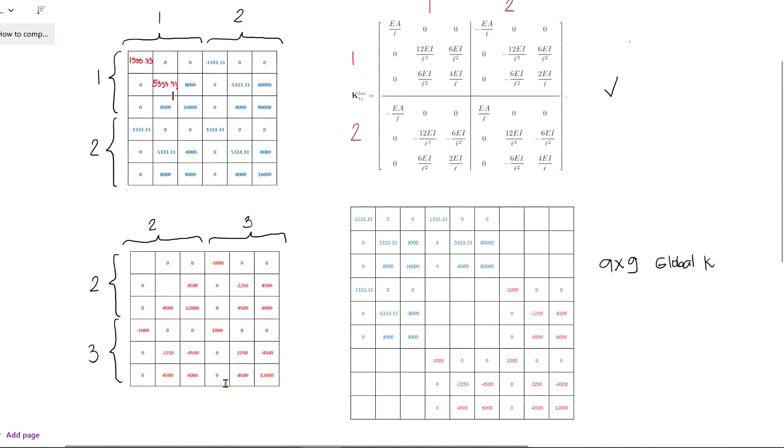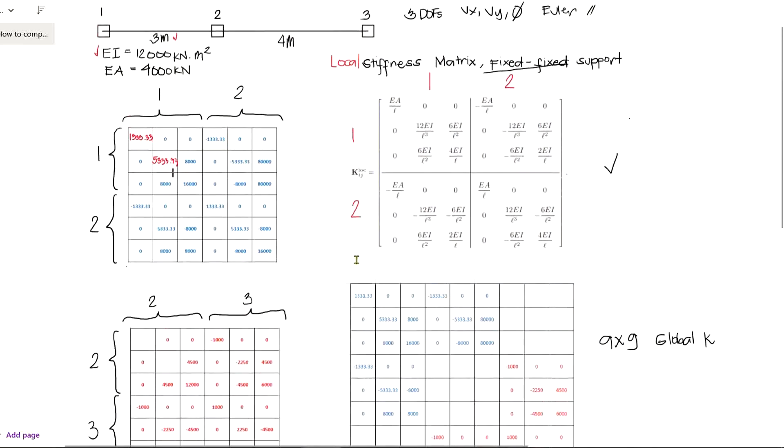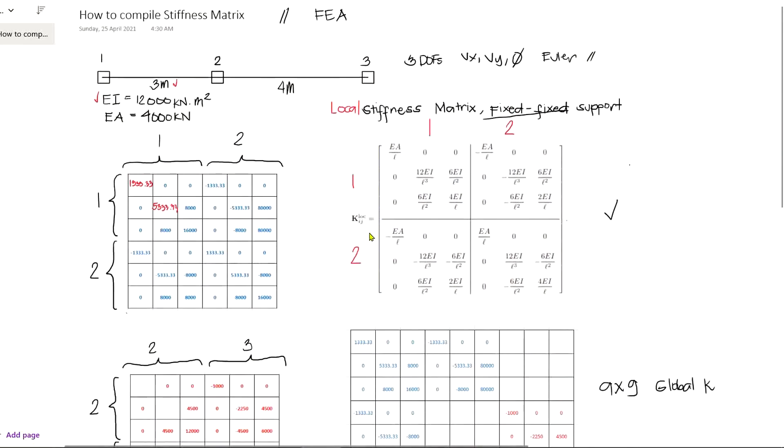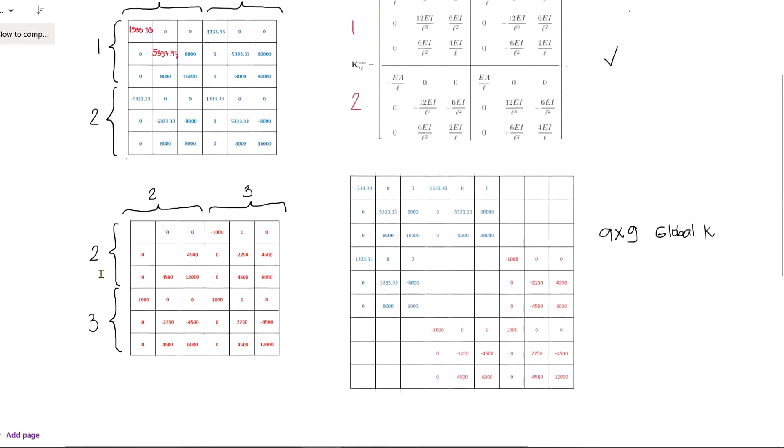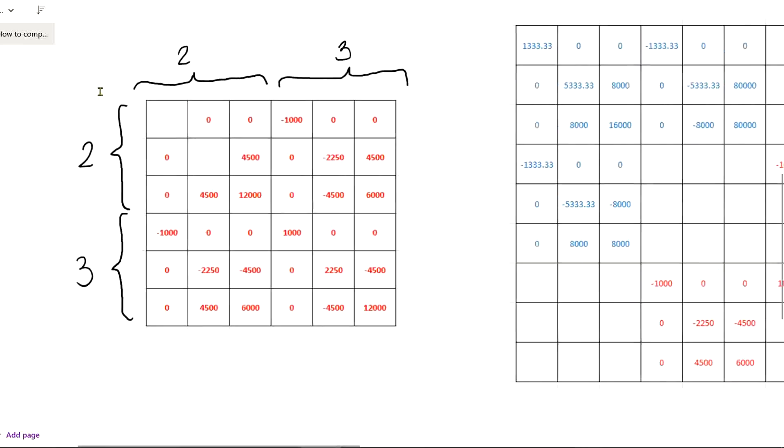Now let's do the same to element 2-3. Using the local stiffness matrix, we can simply substitute the corresponding value of the length, which is 4 meters. Take note that length 1 and length 2 are different. It just so happened that I assumed EI and EA common to both elements, but there are some cases where EI and EA are different. So for this, let's assume that EI and EA is constant all throughout the beam length.